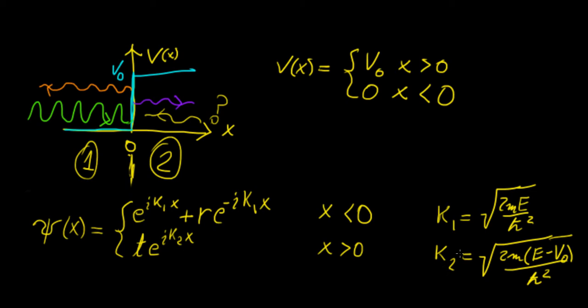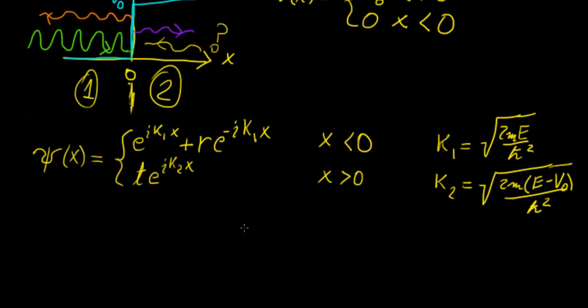We also established that these k1 and k2 values would just be these two quantities, but for the case of k2, we actually have a difference in energy between E and V0. So if we want to actually find out what happens for each energy level, we need to consider three cases around the point V0.